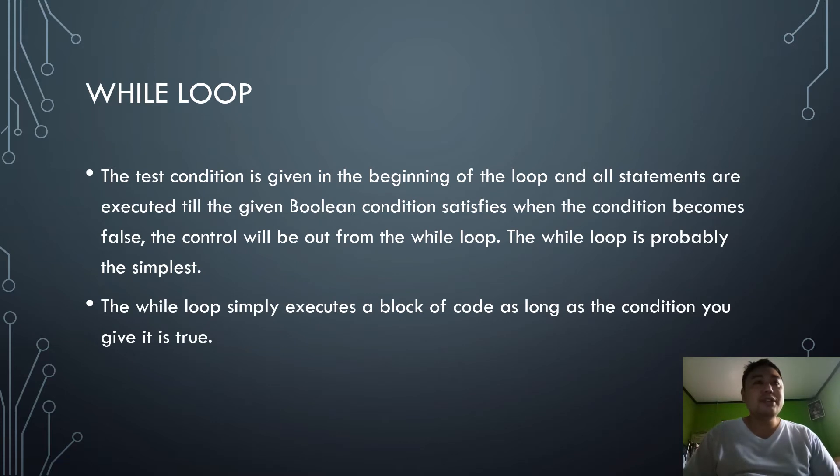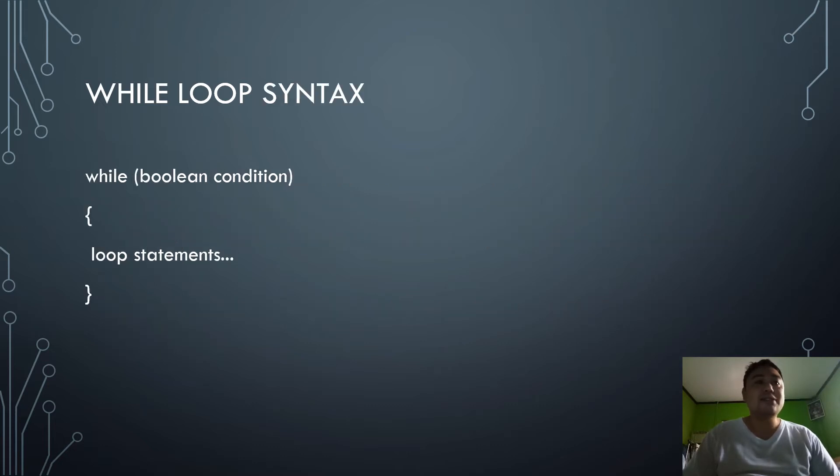The first loop is the while loop. What is a while loop? It is a test condition that is given in the beginning of the loop and all statements are executed till the given boolean condition is satisfied. When the condition becomes false, the control will be out from the while loop. The while loop is probably the simplest. The while loop simply executes a block of code as long as the condition you have given is true. Just like in the syntax, you can see a while condition with boolean condition, then the start of the code, loop statements, and then the end.